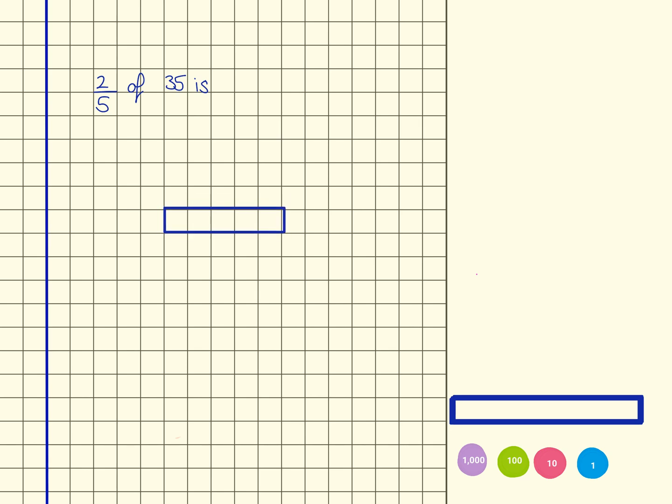And the parts are marked as 1, 2, 3, 4. So we've now got 5 equal parts.